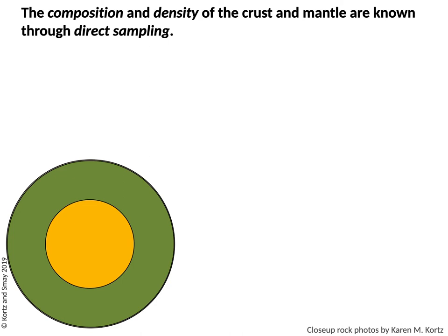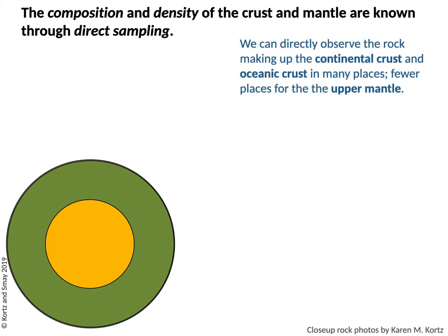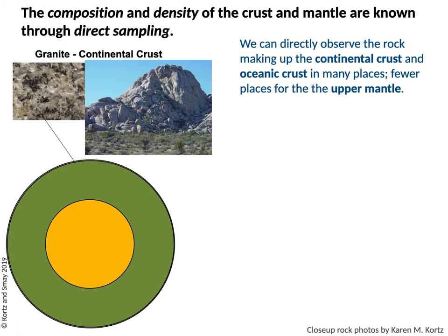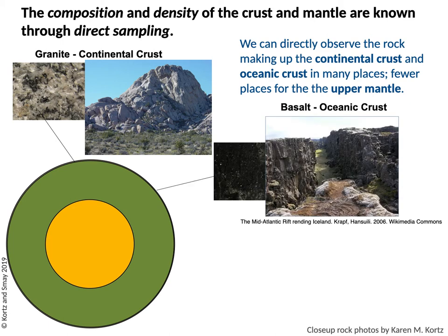The layers that we interact with most are the crust and the mantle. You can actually go out and walk around on the crust — if you're walking around on solid ground, that is technically earth's crust. We can directly observe the rock that makes up the continental crust and oceanic crust in many places. It's a little easier when you can see granite, such as these granite mountains in Arizona. You can go to Iceland and actually see the mid-Atlantic rift where new basalt is forming, and observe basalt that's very young and being formed.